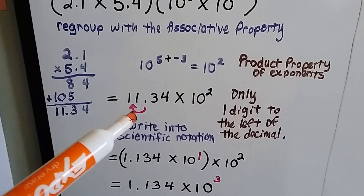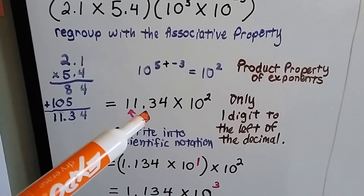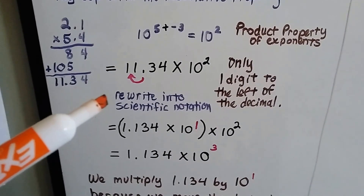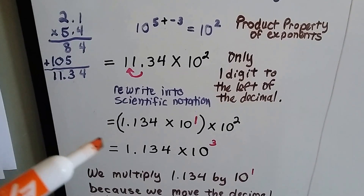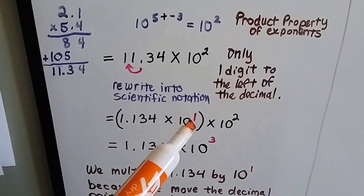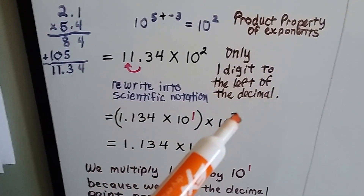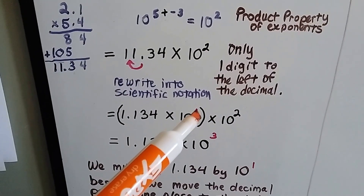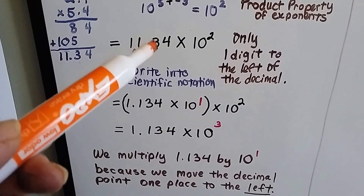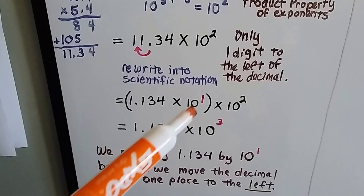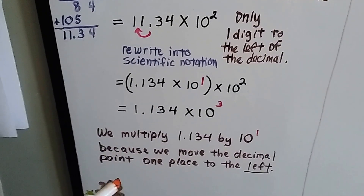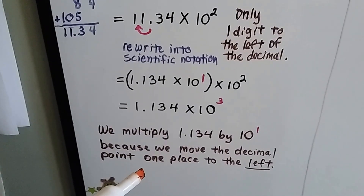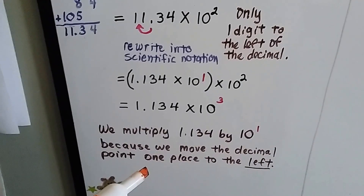Now we're only allowed one digit to the left of the decimal, so we can't have 11.34 times 10 to the second power — we need to move this decimal over. To rewrite it into scientific notation, we multiply it by 10 to the first power times 10 to the second power. We move it one place to the left by multiplying it by a positive exponent, giving us 1.134 times 10 to the first power.